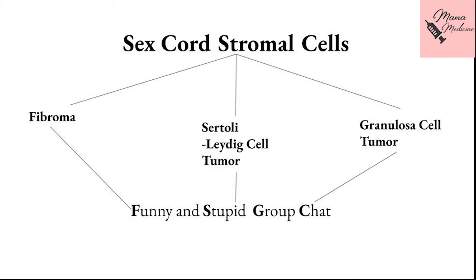The sex cord stromal tumors are further subclassified into fibroma, Sertoli-Leydig cell tumor, and granulosa cell tumor. I have found an easy way to learn all of this subclassification. The mnemonic is 'Funny and Stupid Group Chat': the F from 'Funny' stands for fibroma, the S from 'Stupid' stands for Sertoli-Leydig cell tumor, and the GC from 'Group Chat' stands for granulosa cell tumor.